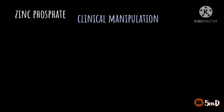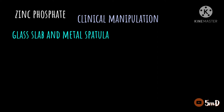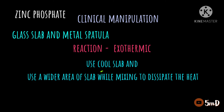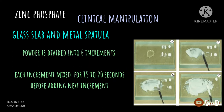Now let us see how to manipulate zinc phosphate cement. We need a glass slab and a long metallic spatula for manipulation. The reaction is basically exothermic, so it is better to use a cool slab to dissipate the heat and use a wider area of the slab while mixing. The powder is divided into at least six increments for the purpose of reducing heat generated.